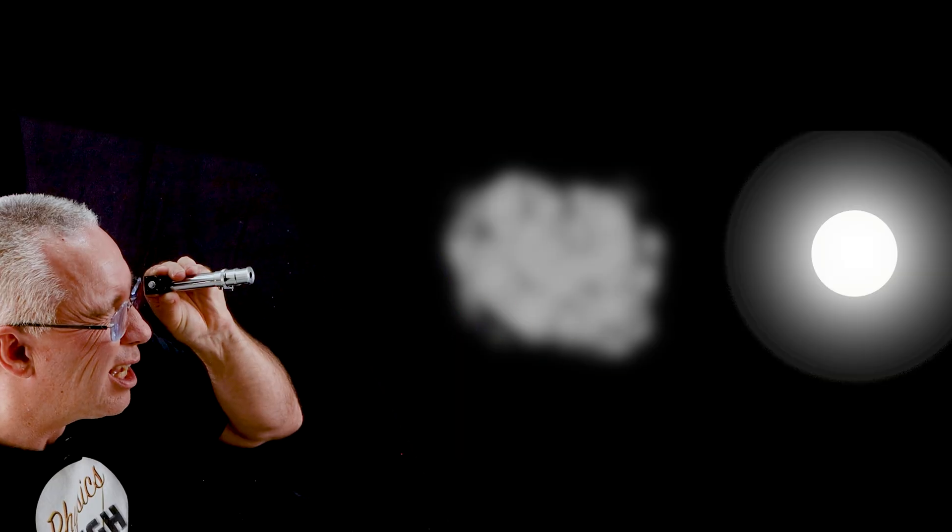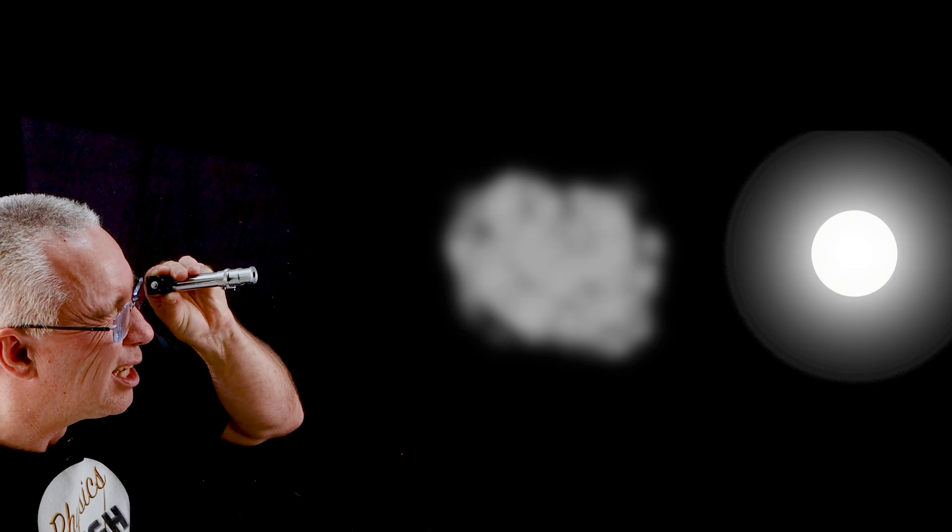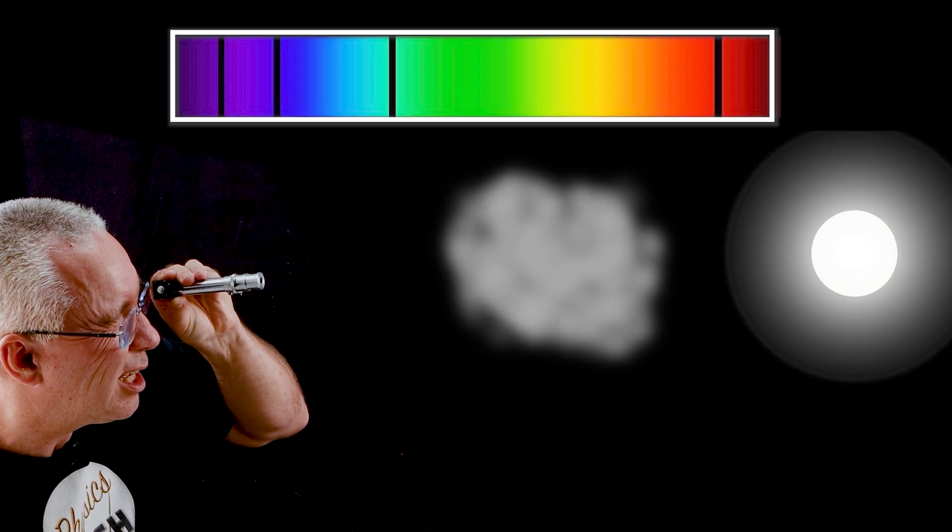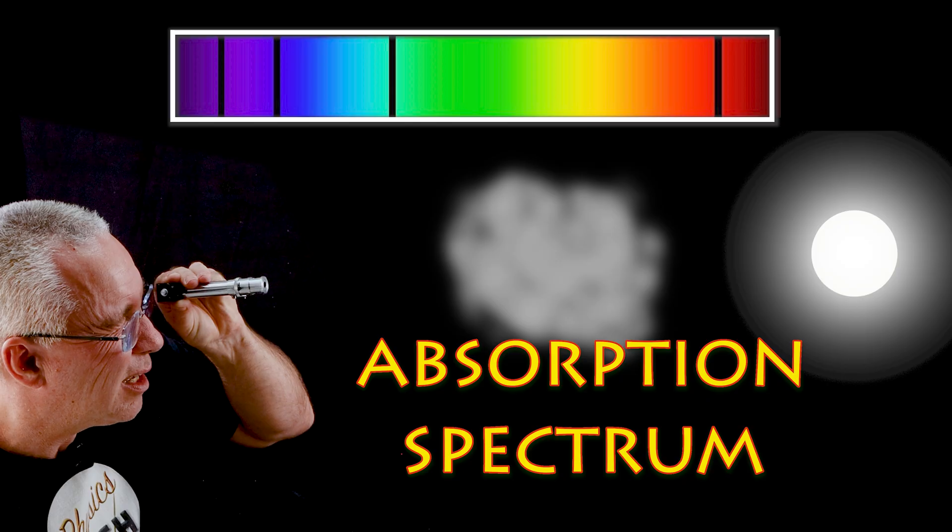When light passes through, let's say, a gas of hydrogen, the hydrogen absorbs very specific amounts of energy based on their frequency. So what you end up getting at the other side, a continuous spectrum with bands representing the missing frequencies. In other words, it's an absorption spectrum.